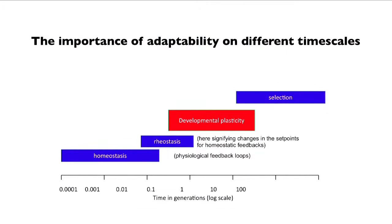Then there's rheostatic adaptation, which basically is resetting the set points for homeostatic adaptation. That would be physiological adaptation to a different climate. Say you go up a mountain and you need more hemoglobin in your blood — that would be a rheostatic adaptation. It can take a week to do that.